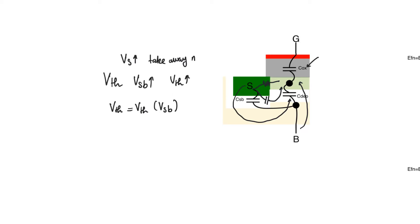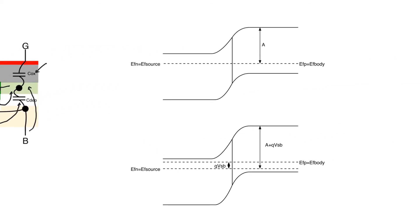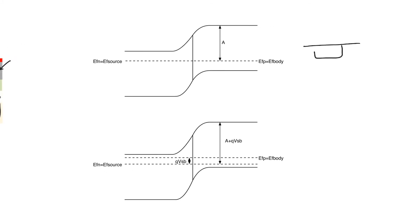This is called the body effect. The body effect is best seen by drawing the band diagram between the source and the body. If this is the source and we are still in depletion or accumulation mode, then there is a reverse-biased P-N junction between the source and the body. When we look at the band diagram of this P-N junction, let's assume for a moment that we have ground at the body and ground at the source — this is an equilibrium band diagram for a P-N junction.